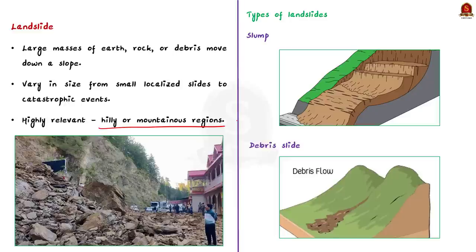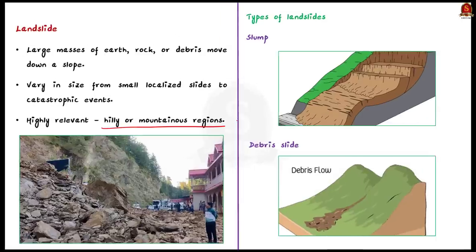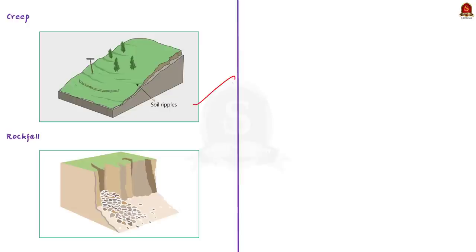There are various types of landslides depending on the type of movement of materials. First is slump — the slipping of one or several units of rock debris with a downward rotation with respect to the slope over which the movement takes place. Second is debris slide — the rapid rolling or sliding of earth debris without backward rotation of mass. Third is creep — a very slow and continuous downslope movement of soil and rock, often unnoticed but capable of causing long-term damage to structures.